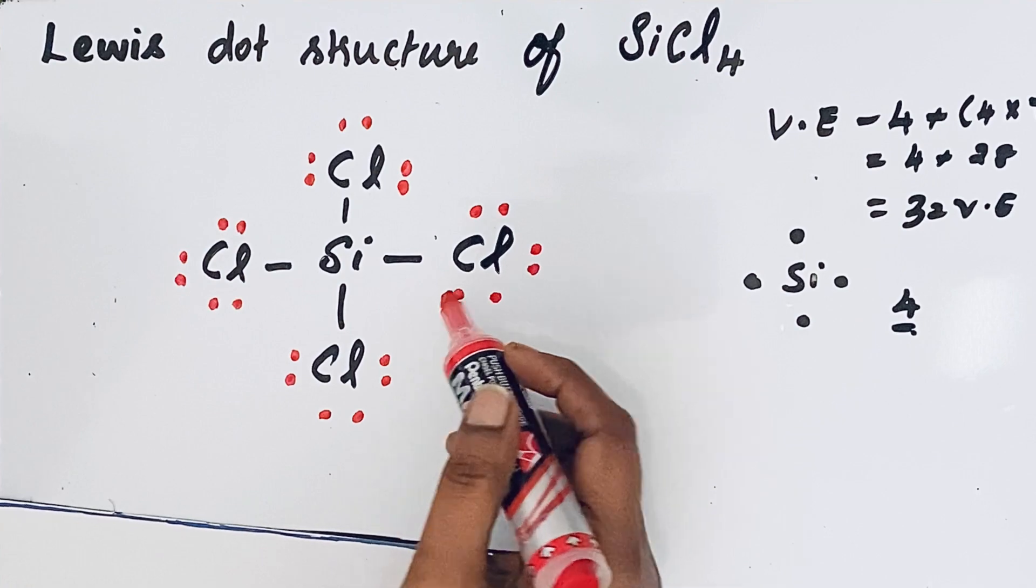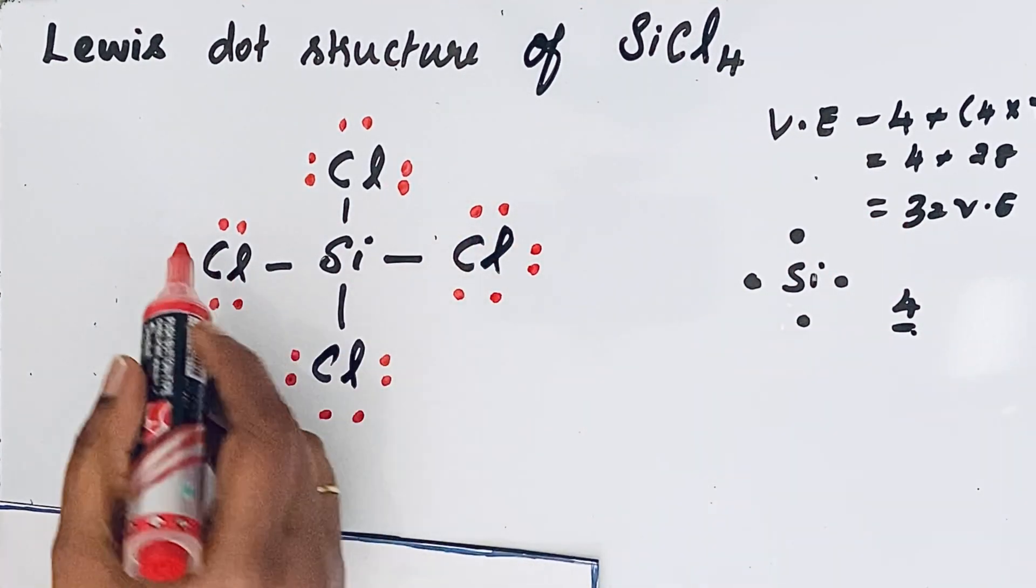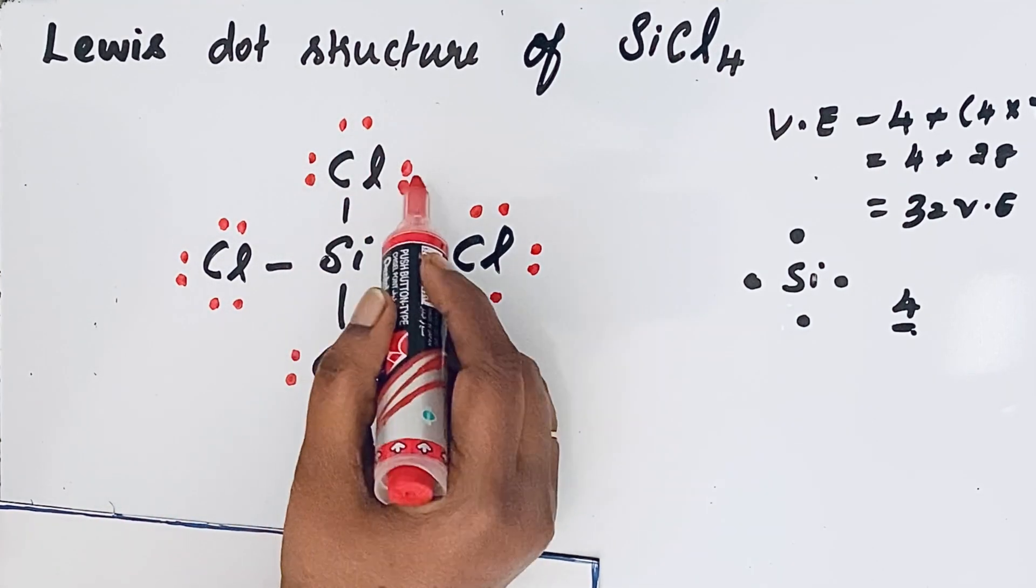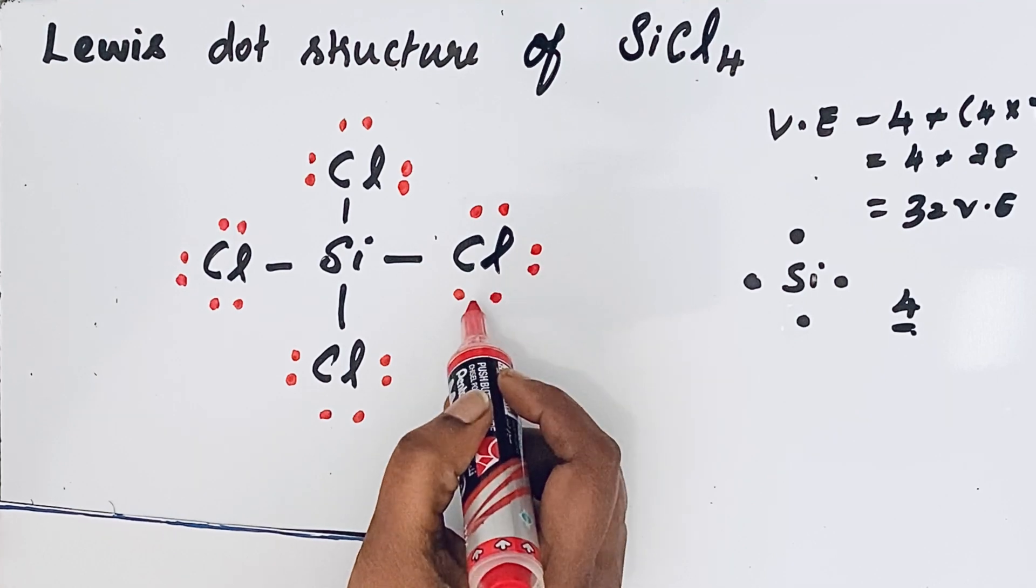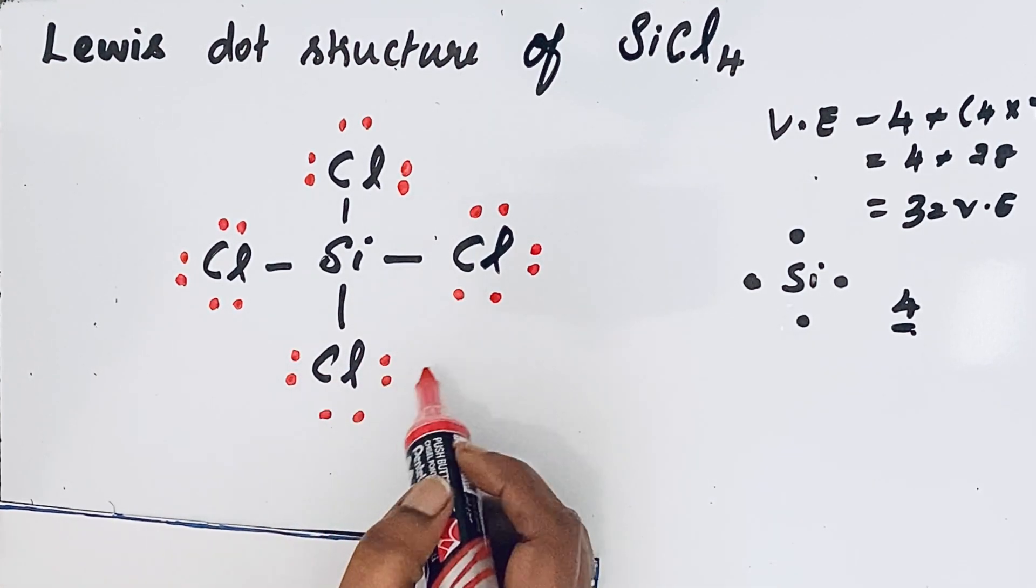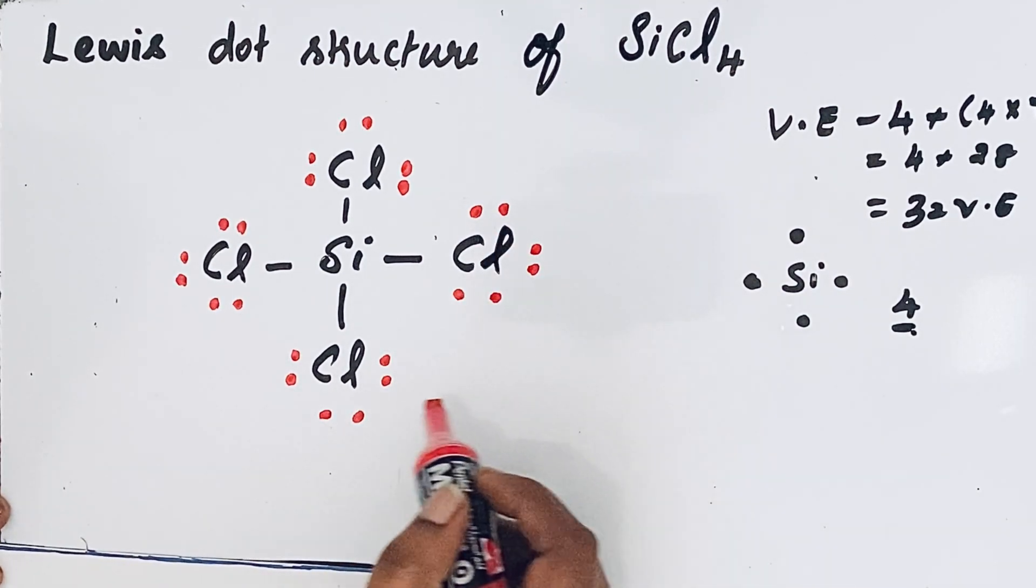So now let us check that the total valence electrons, that means the thirty-two valence electrons, are present here or not. Counting: two, four, six, eight, ten, twelve, fourteen, sixteen, eighteen, twenty, twenty-two, twenty-four, twenty-six, twenty-eight, thirty, thirty-two. So thirty-two valence electrons are present.